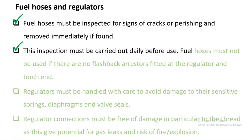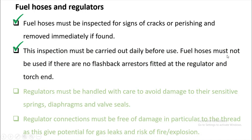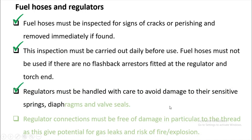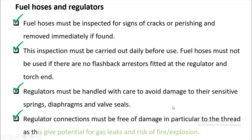Fuel hoses must not be used if there is no flashback arrestor fitted at the regulator and torch. The flashback arrestor prevents fire from traveling back into the cylinder. Regulators must be handled with care to avoid damage to their sensitive spring diaphragms. Regulator connections must be free of damage, particularly to the thread, as thread damage can cause gas leaks and risk of fire and explosion.